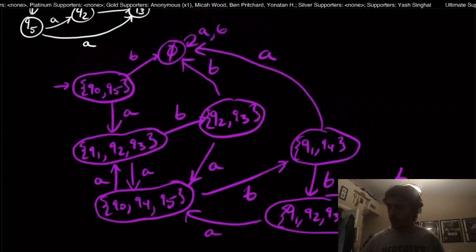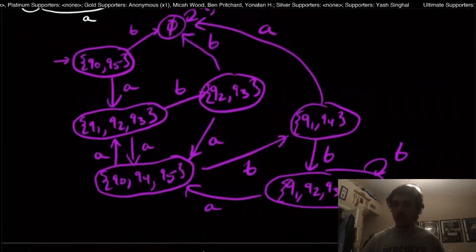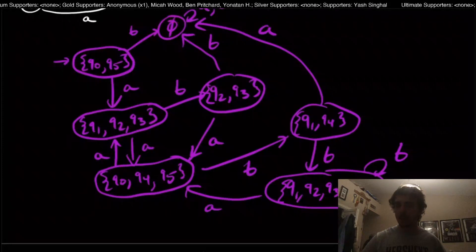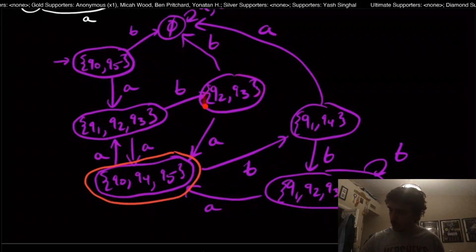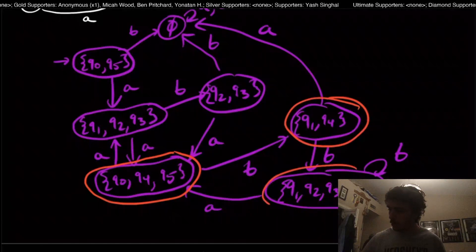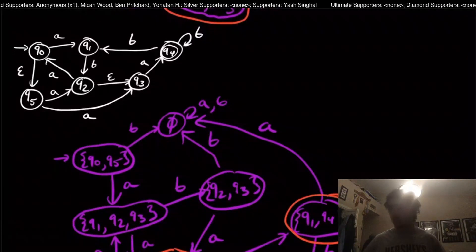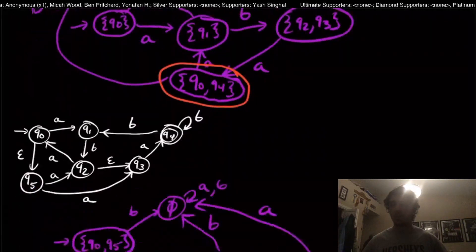To finish this off, we need to find the final states. The only accepting state in the original NFA is q4, so any DFA state containing q4 is final. The empty set has nothing, so not final. {q0, q4, q5} contains q4 — final. {q1, q4} contains q4 — final. {q1, q2, q3, q4} contains q4 — final. Even with a slight modification, the DFA is considerably larger than the original.